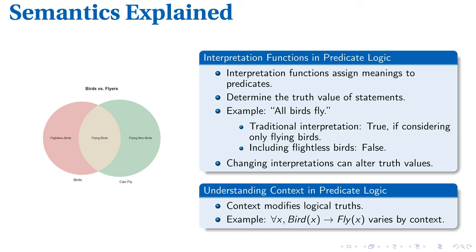If we expand bird to include flightless birds like ostriches, the truth of all birds fly crumbles. Opt for Python. Assign x as bird and x can fly becomes dependent on x. An ostrich can't fly, but a sparrow can.